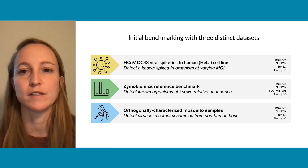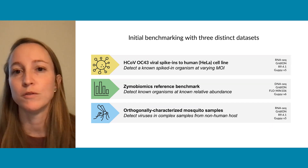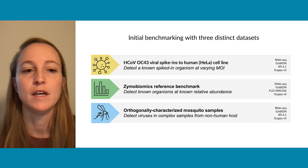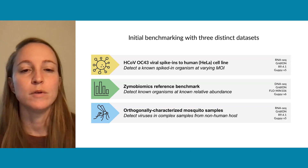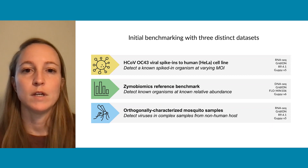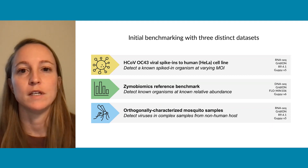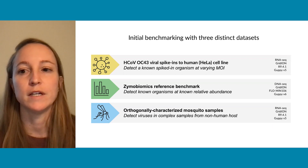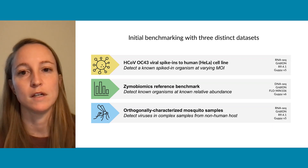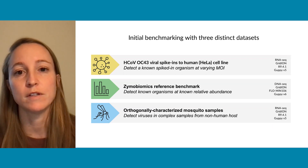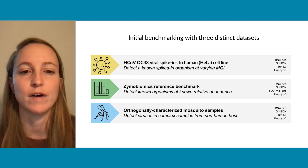We were first interested in understanding whether we could detect a known spiked-in organism at varying concentrations. We spiked human coronavirus OC43 into human HeLa cells and allowed those to incubate for 24 hours, upon which we did RNA-seq using a GridION with an R9.4.1 flow cell, base called using Guppy v5.